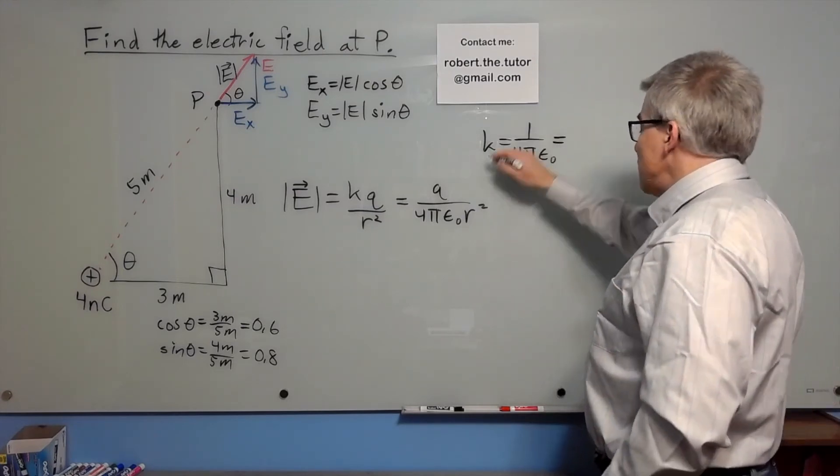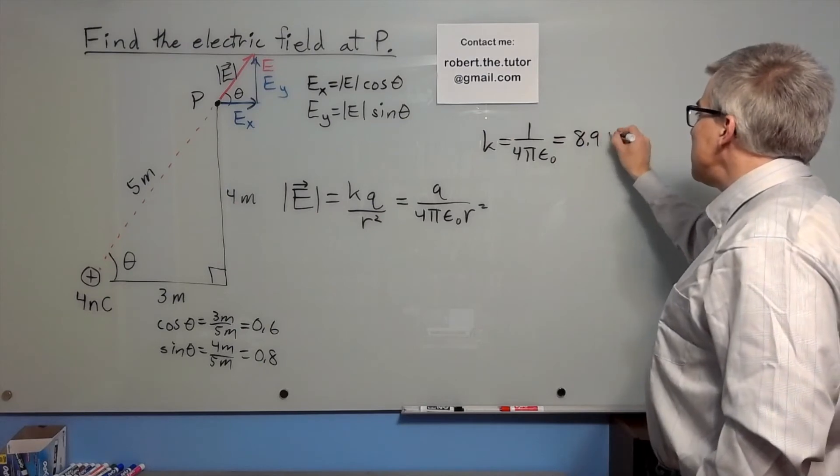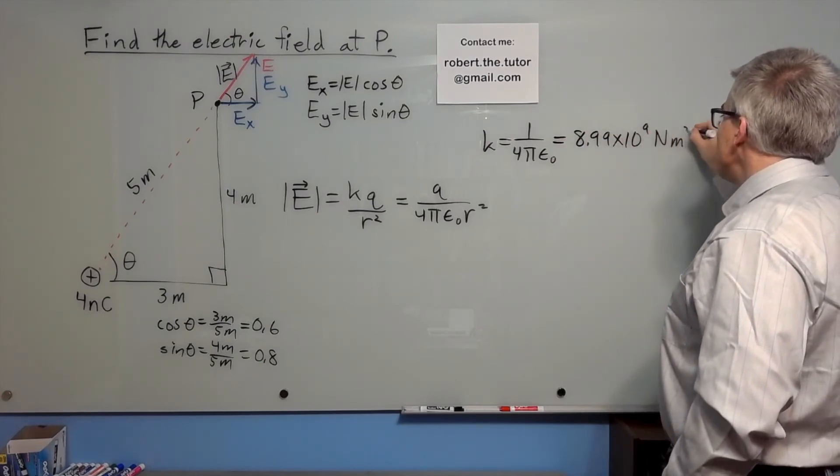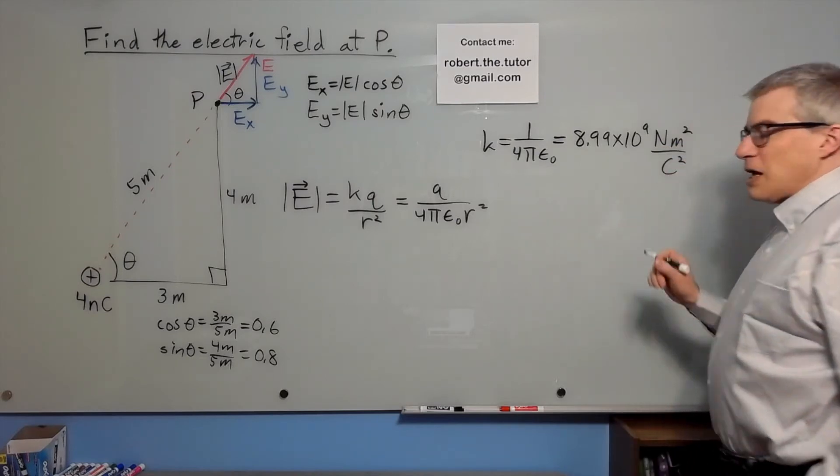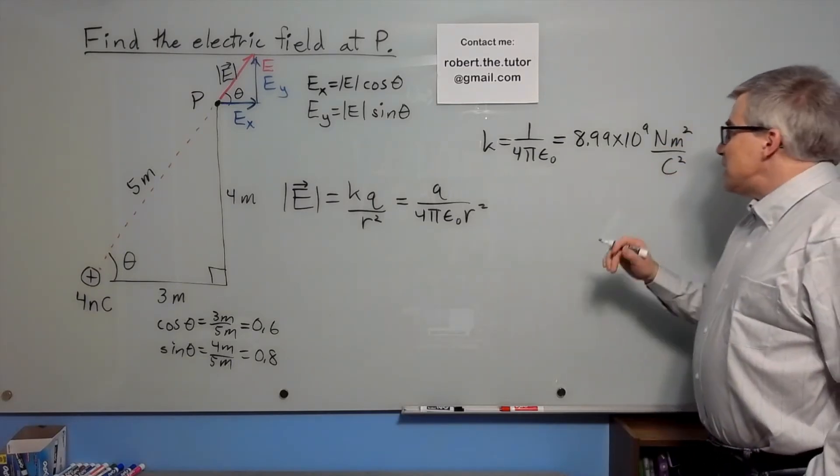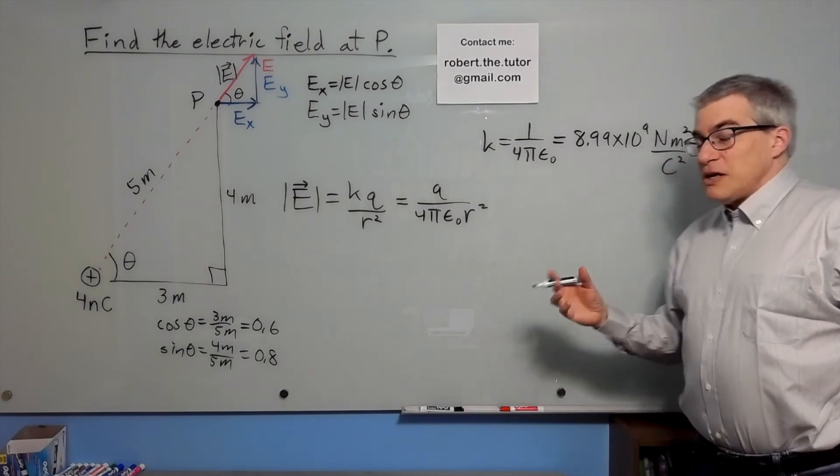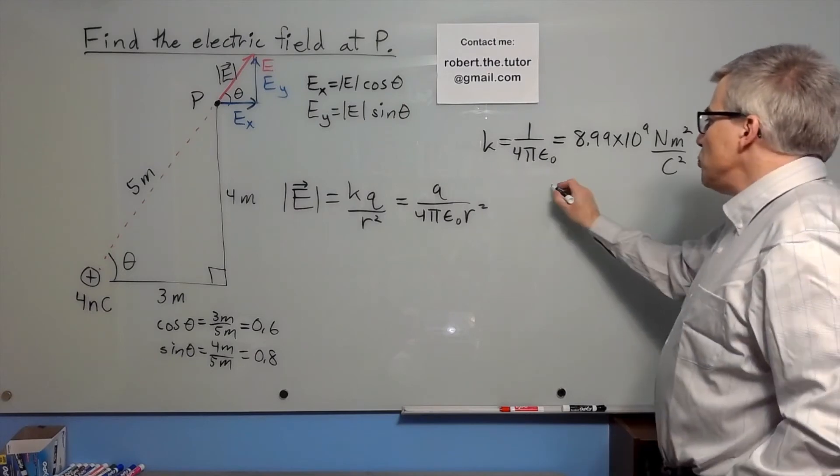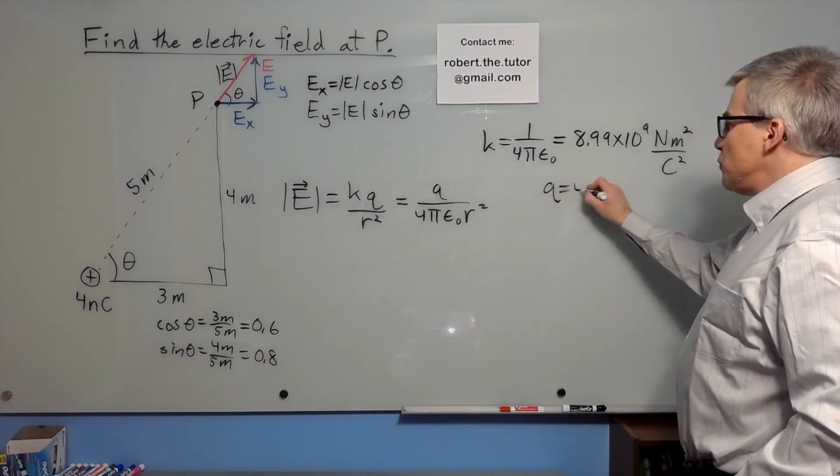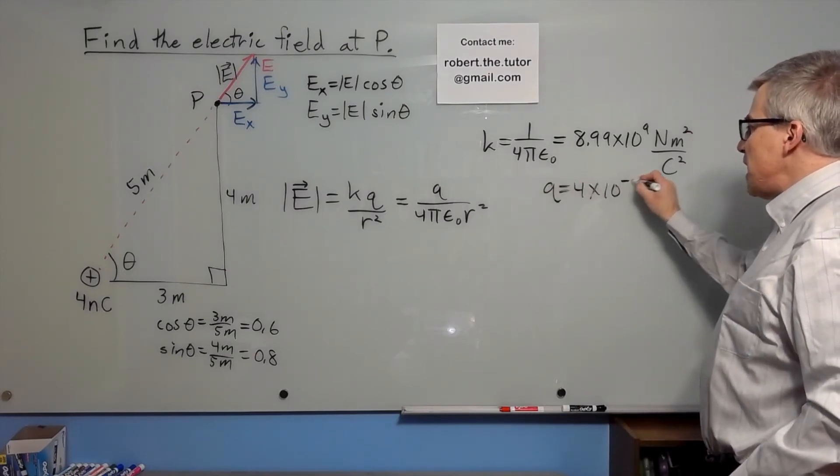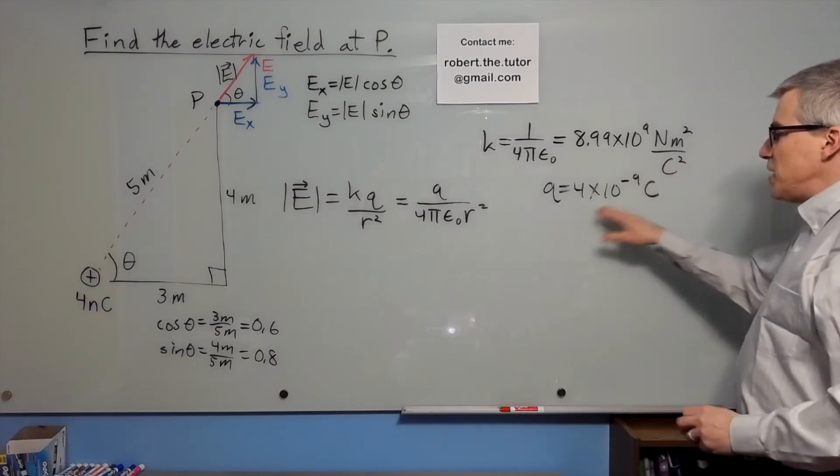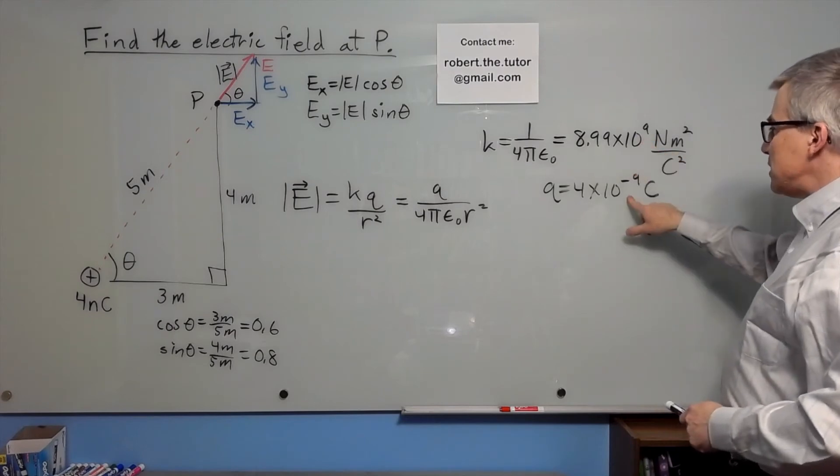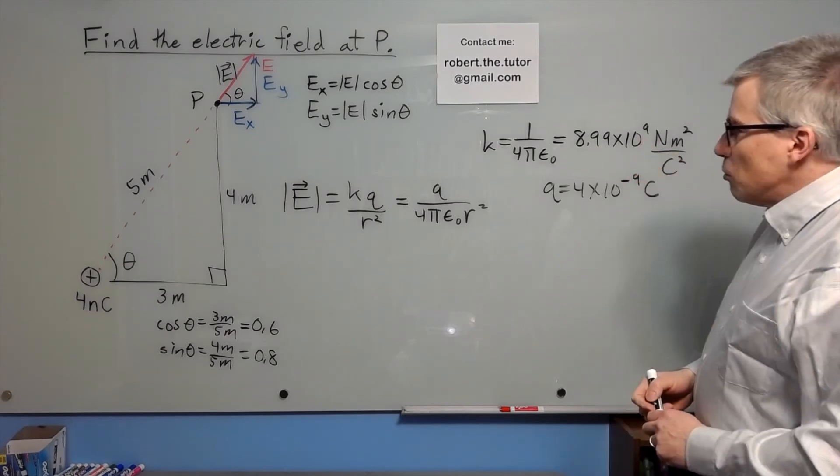At any rate, the amount of this is 8.99 times 10 to the ninth newton meter squared per coulomb squared. The force between a couple of coulombs is 9 billion newtons if they were one meter apart. Now that we know k, the electric charge q is 4 times 10 to the negative ninth power coulombs, 4 nanocoulombs. So k times q, the 10 to the ninth and the 10 to the negative nine cancel out. So what do we use for r?